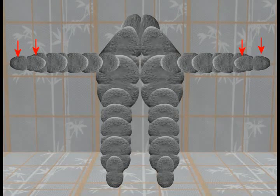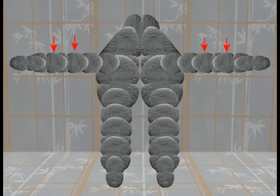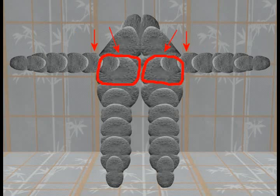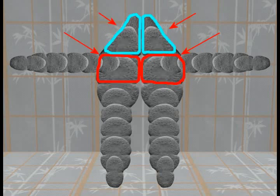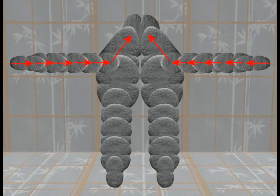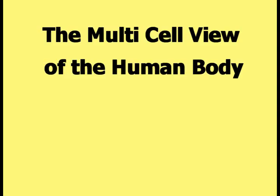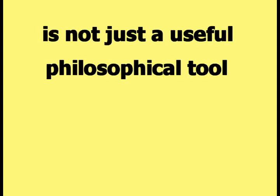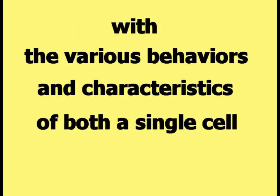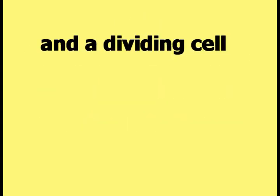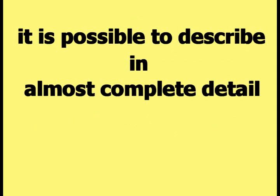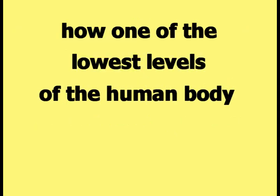The hand is connected to the forearm by one dividing cell. The lower forearm is connected to the upper forearm, which is connected to the lower upper arm, which is connected to the upper arm, which is connected to the upper chest, and the upper chest is connected to the head. This picture provides one way to visualize how the hands are connected to the head, or how any part of the body is connected to any other part. The multi-cell view is not just a philosophical tool — by combining it with the behaviors and characteristics of both a single cell and a dividing cell, it is possible to describe in almost complete detail how one of the lowest levels of the human body is constructed and behaves.